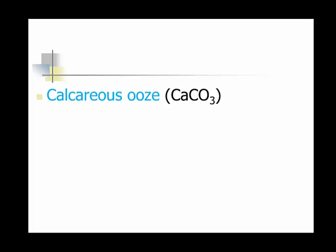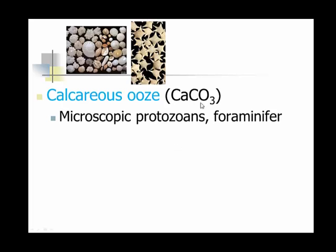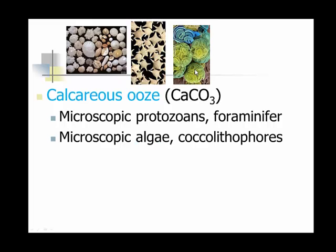We have two basic types of oozes. The first is called calcareous ooze because it's primarily made of CaCO3, calcium carbonate. Microscopic protozoans and foraminifera — protozoans tend to have normal-looking shells, although very, very tiny. Foraminifera tend to have these star-like shapes, and you can see they've got holes in them. Microscopic algae and coccolithophores are incredibly beautiful, complicated life forms — these are not true color images.